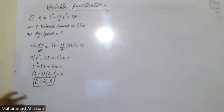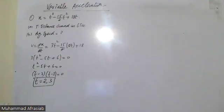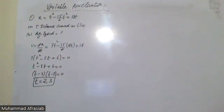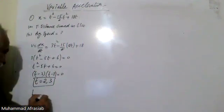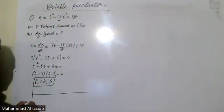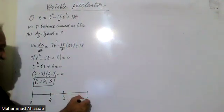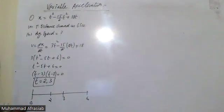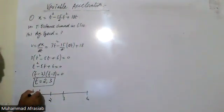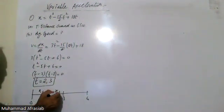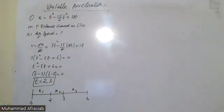That is why I say: first find the velocity and then put it equal to zero to find the turning points of the particle. This particle has three intervals of motion. We go from 0 to 2, then 2 to 3, then 3 up to 6. So there is a first displacement, a second displacement, and a third displacement.